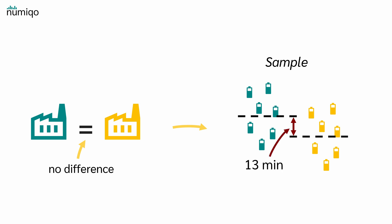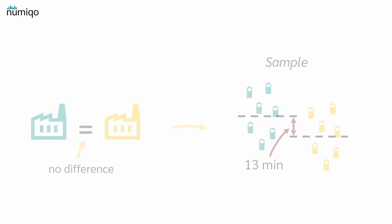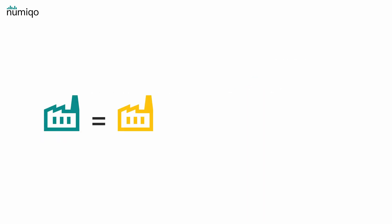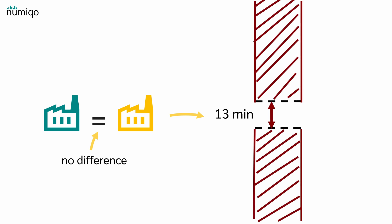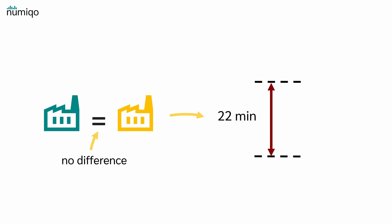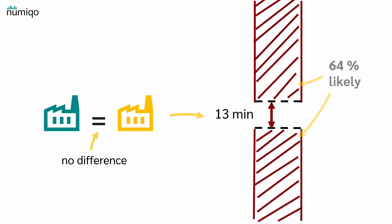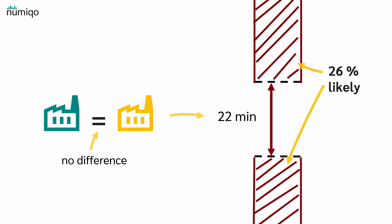For example, the difference between the two samples' averages might be 13 minutes. From a population where we assume no real difference, we draw two samples that differ by 13 minutes. We can ask: how likely is it to take samples that differ by 13 minutes or more? Or if we draw a sample which differs by 22 minutes, we can ask how likely it is to get samples that differ by 22 minutes or more. For example, it could be 64% likely to draw samples which differ 13 minutes or more, or 26% likely to draw samples which differ 22 minutes or more.